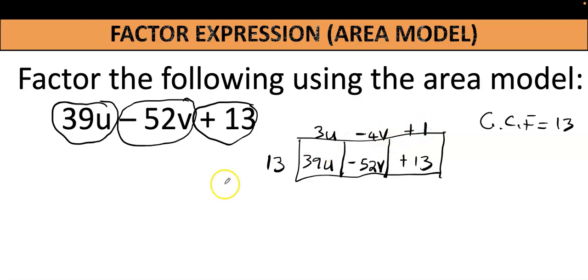So when writing our answers, we put the GCF first, which would be the width, times the length of all three rectangles combined. So that's 13 times 3u minus 4v plus 1, and now we have factored this expression. This would be our lovely answer. Thank you, goodbye.